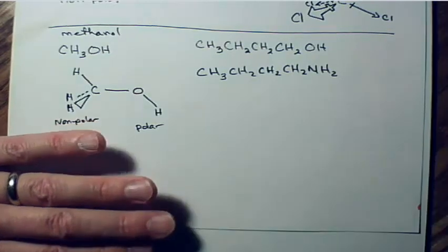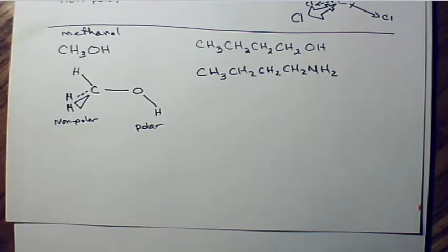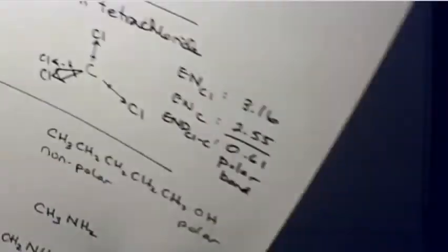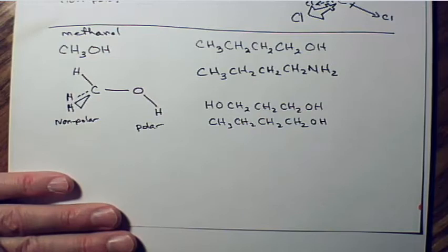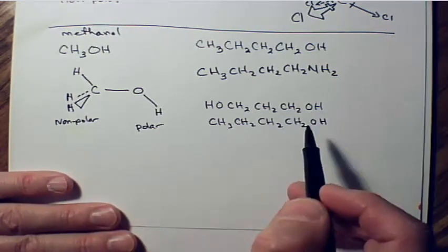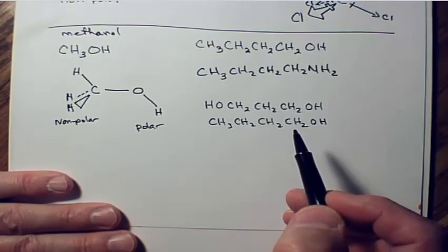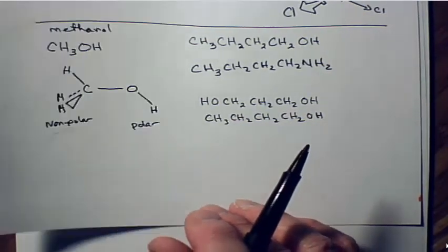Which of these two molecules is more polar? The top one — because it has two OH groups. Even though I have roughly the same number of atoms or groupings on both, the one on top has more of the highly polar ends, making it more polar overall. Since the OH bond has a greater electronegativity difference than the NH bond, more OH groups means greater overall polarity.